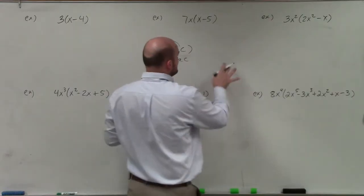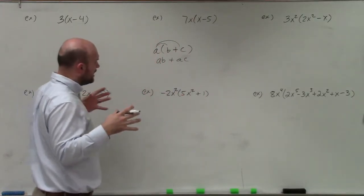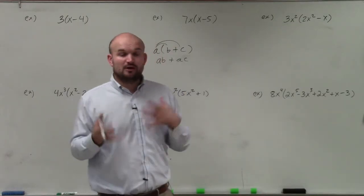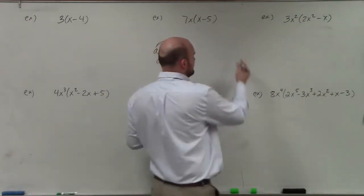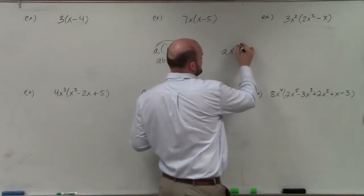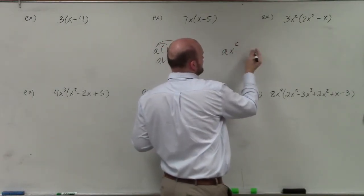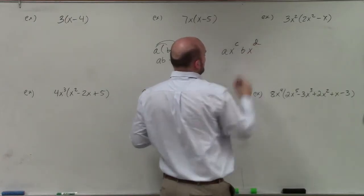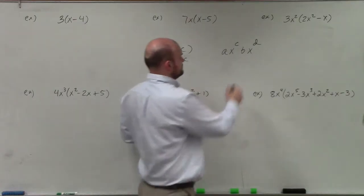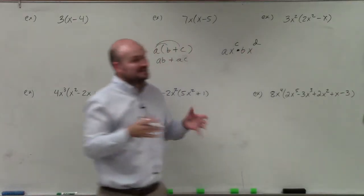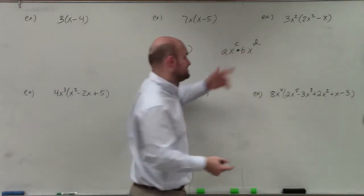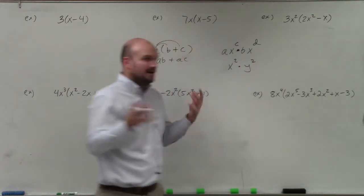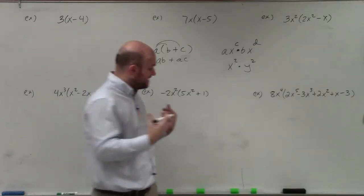Now it's also very important to understand that when we are multiplying, we can only multiply terms that have the exact same base. So for instance, if I have a times x to the c times b times x to the d, basically the x, which is the base of the exponent, these have to be the same. So I can't multiply x squared times y squared, for instance. The bases are not the same, so you can't do that.